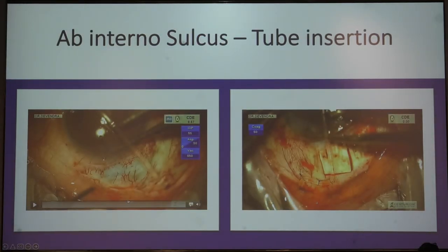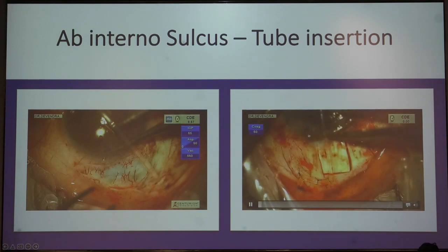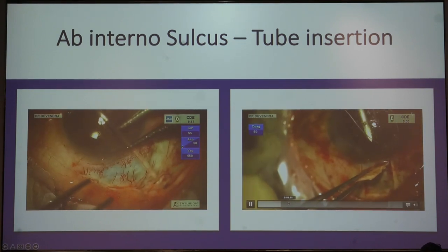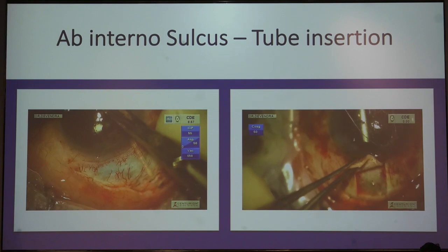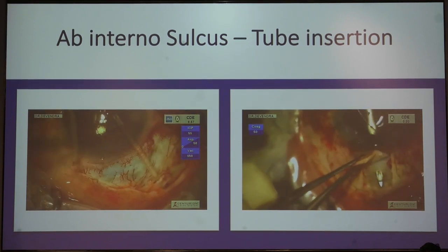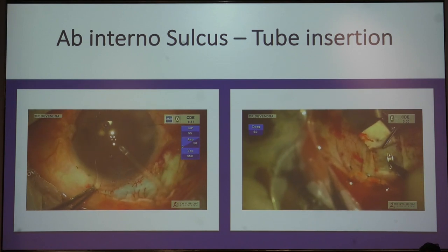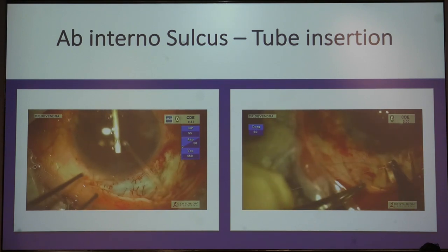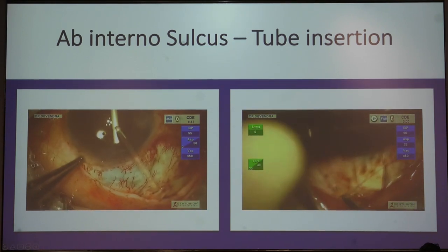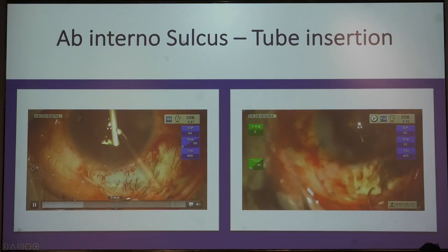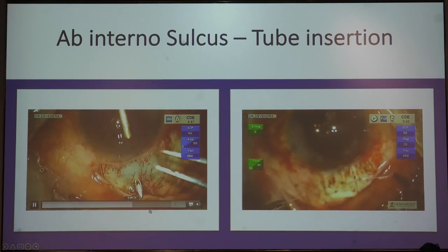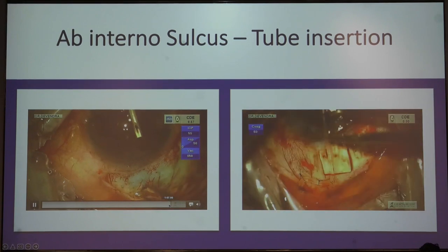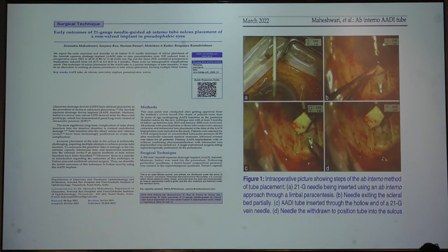This is the ab-interno technique, which we recently published in IGO. A 21-gauge needle is used, taken from the opposite side of the limbus, coming through the limbus and under the capsule coming out. Like the trail technique, the tube is fed into this needle and the needle is advanced into the anterior chamber. The tube then goes exactly into the sulcus without any difficulty. Conjunctival closure is done in the same way.